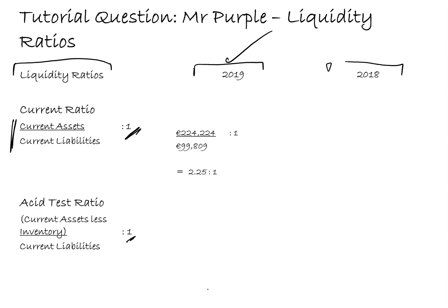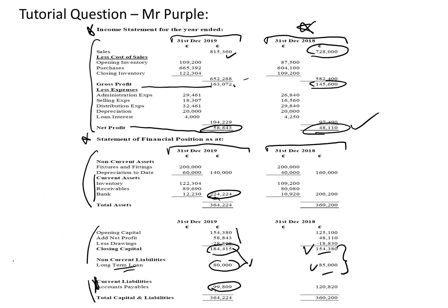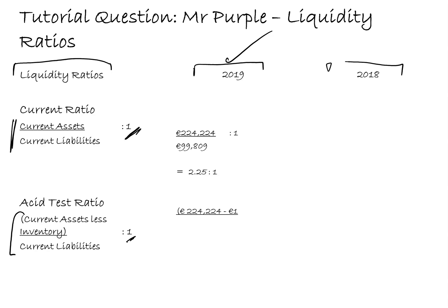For the acid test ratio I do the same thing but remove the inventory from the current assets. So it's 224,224 minus 122,304 - which is the receivables and bank added together - divided by the current liabilities 99,809, which works out at 1.02 to 1.